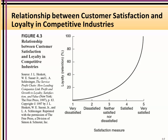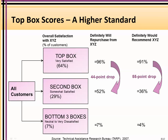Here's an example of customer satisfaction and loyalty in competitive industries. Notice that the higher the satisfaction, the higher the loyalty. You have to hang on to that customer, and you see a lot of companies doing things to lock in customers — to get them happy, keep them happy, and get them familiar with their service. This is one reason why Apple has iTunes and Android has Google Play. Top box scores refers to ticking 'very satisfied.' Notice the point drop between very satisfied and somewhat satisfied — a 44% point drop in repurchasing and a 55% point drop in recommending. So if you can get customers from the second box up to the top box, you'll get customers that will buy again and recommend you.